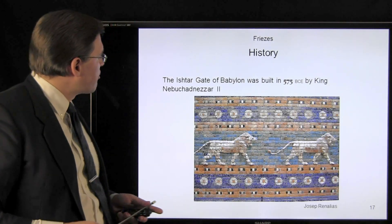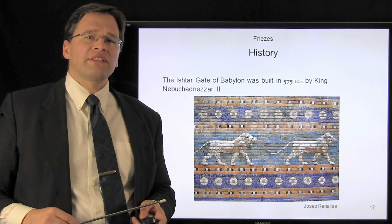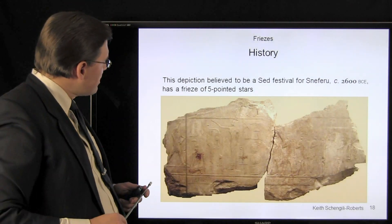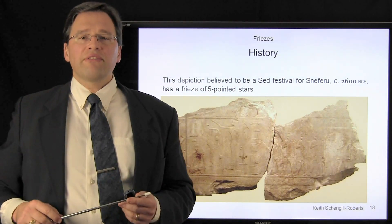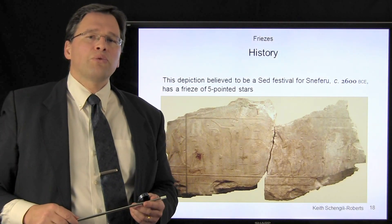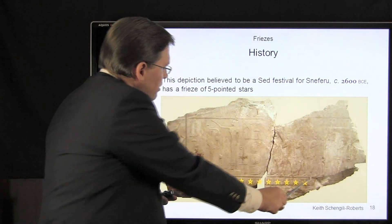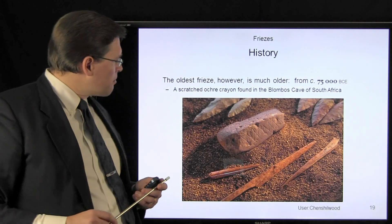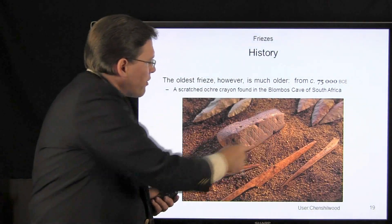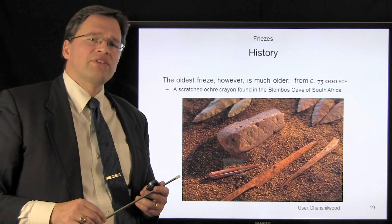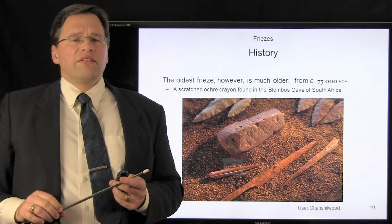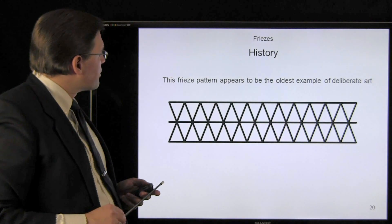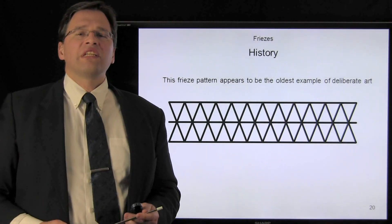Here we see the Ishtar Gate from Babylon, commissioned by King Nebuchadnezzar II in approximately 575 BCE. Even older, this inscription is believed to commemorate a festival for Pharaoh Sneferu in approximately 2600 BCE, and at the bottom of this inscription is a frieze of five-pointed stars. However, the most interesting is a small ochre crayon found in the Blombos Cave of South Africa. This very simple etched pattern is believed to be 75,000 years old and appears to be the oldest example of deliberate human art.